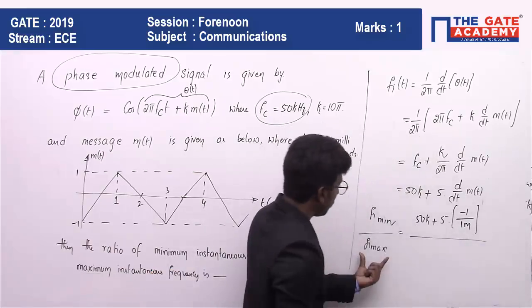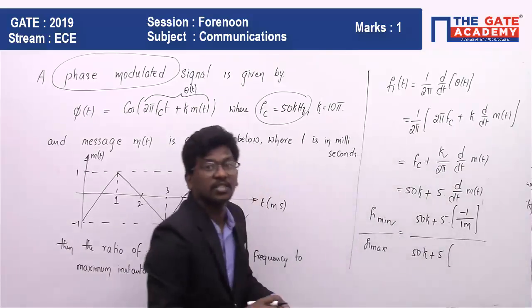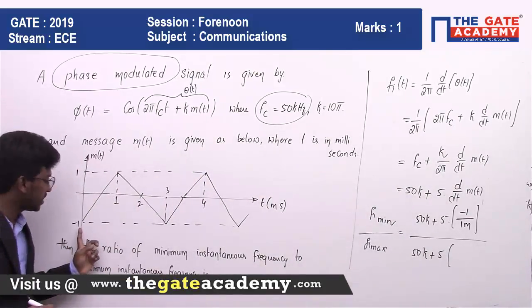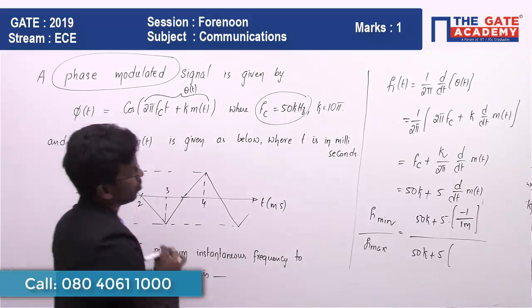And what is the maximum slope? 50k + 5 · the maximum slope is this one. For one unit change, 0 to 1, the slope is changing 2 times. Y is changing 2 times. That is 2/(1 millisecond).